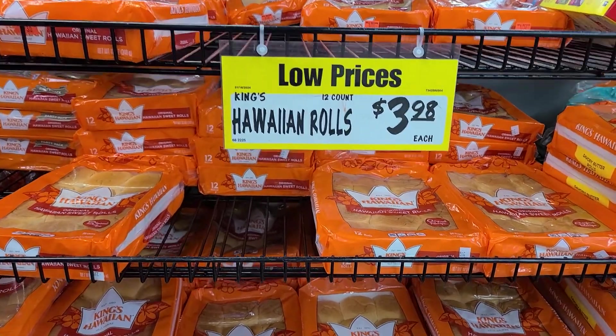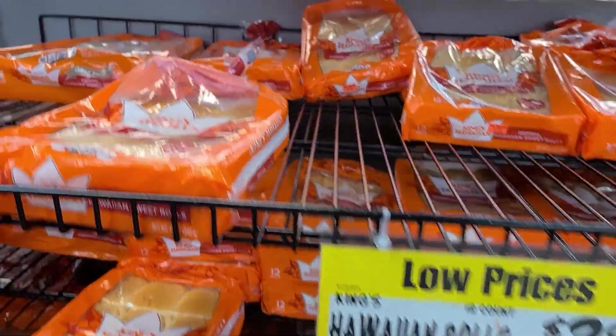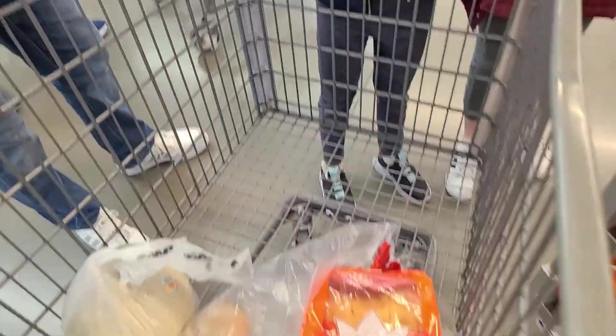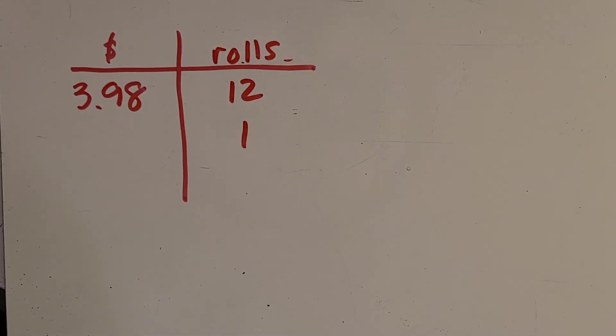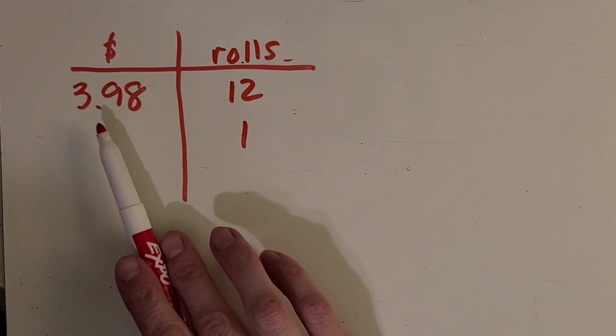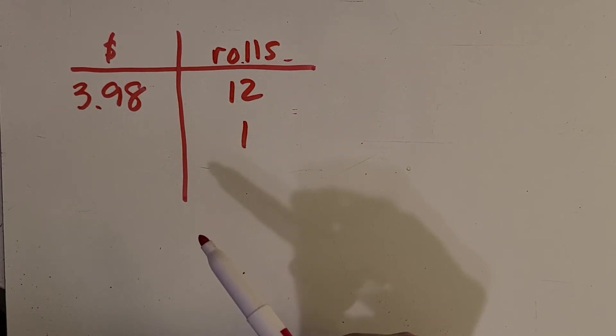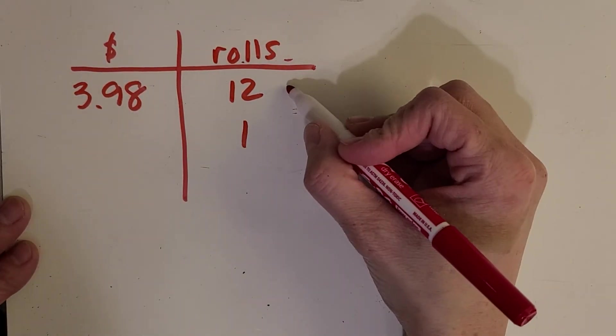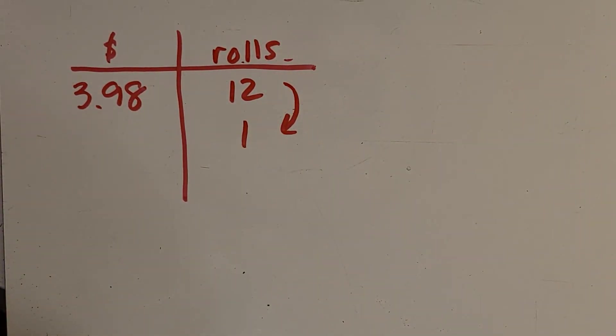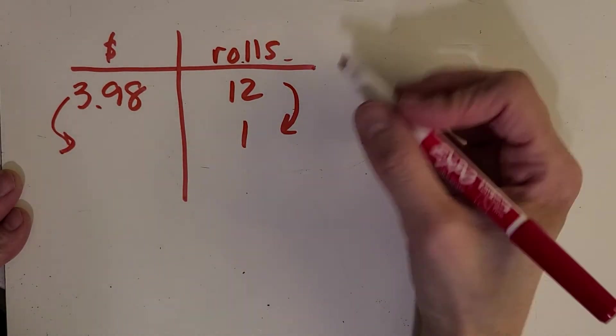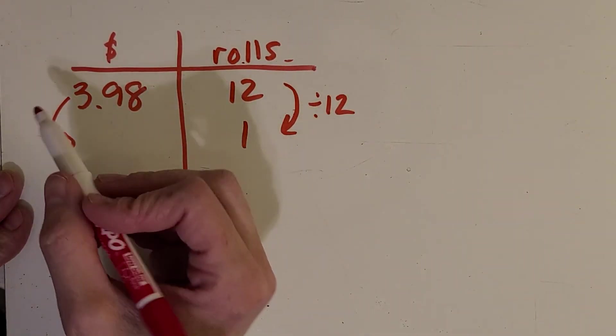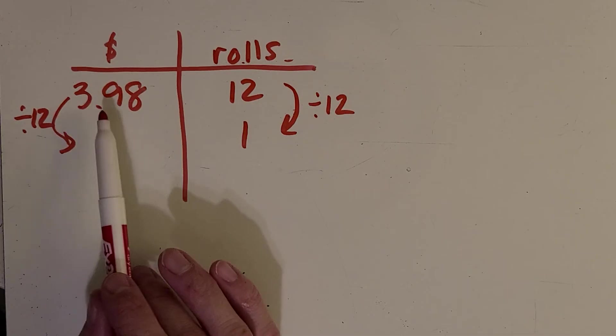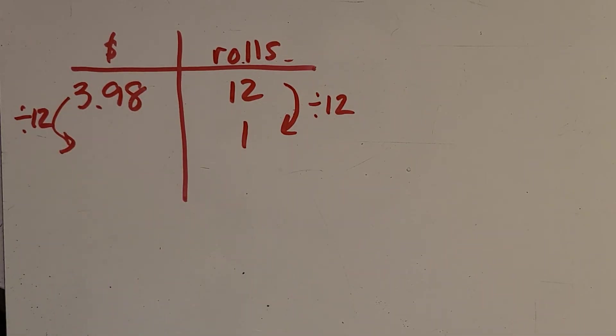Okay last we have these packs of 12 rolls for $3 and 98 cents. Let's figure out the unit rate. All right now we have the 12 rolls for $3 and 98 cents. And again a unit rate is how much does just one roll cost. So what pattern are you seeing here? What can we do to get from 12 down to one? Okay you got it. Divide by 12. So we're going to do that over here. And I want you to pause the video. See what you get for $3 and 98 cents divided by the 12 rolls.